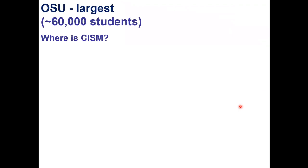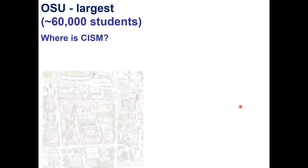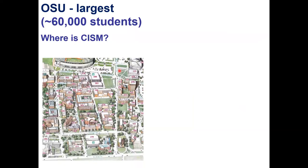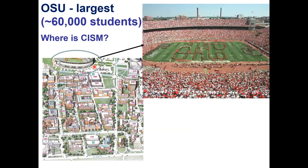Where exactly is Ohio State University and my office on that campus? Ohio State is a huge campus, one of the largest in the US. I'm situated about five to seven minutes' walk from the iconic Ohio Stadium, which holds more than 100,000 people.